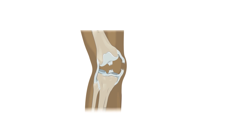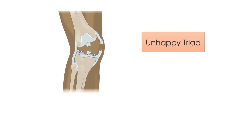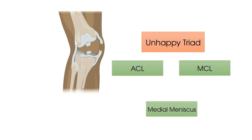The term unhappy triad, terrible triad, or O'Donoghue's triad relates to a lateral blow to the knee, which causes a partial or complete rupture of the ACL, the MCL, and the medial meniscus. For testing the collateral ligaments, use the varus stress test to assess the integrity of the LCL, and use the valgus stress test to assess the integrity of the MCL.